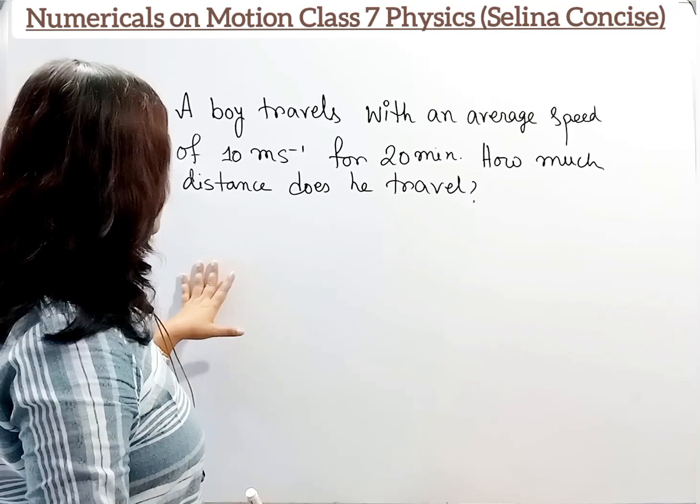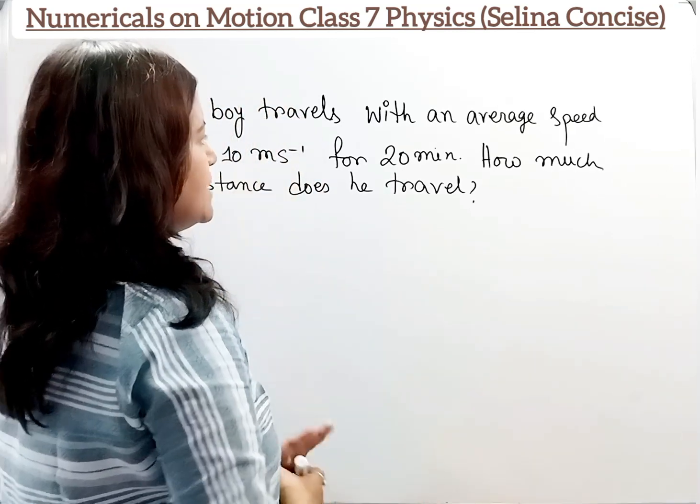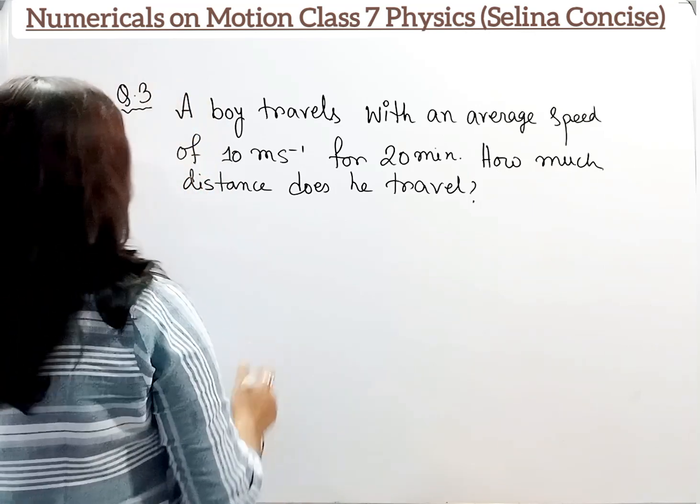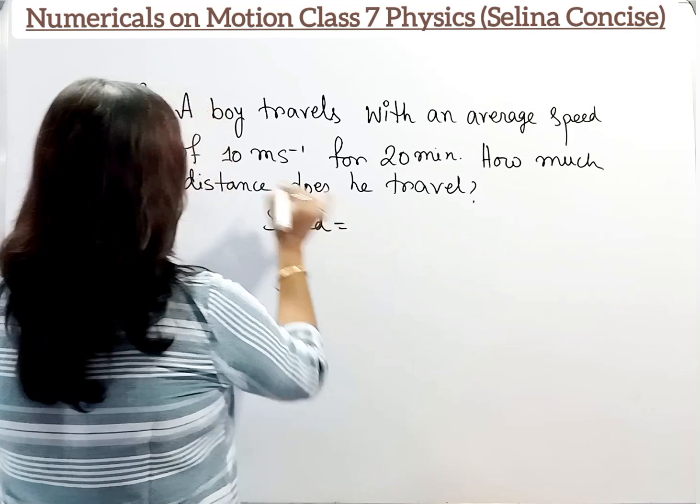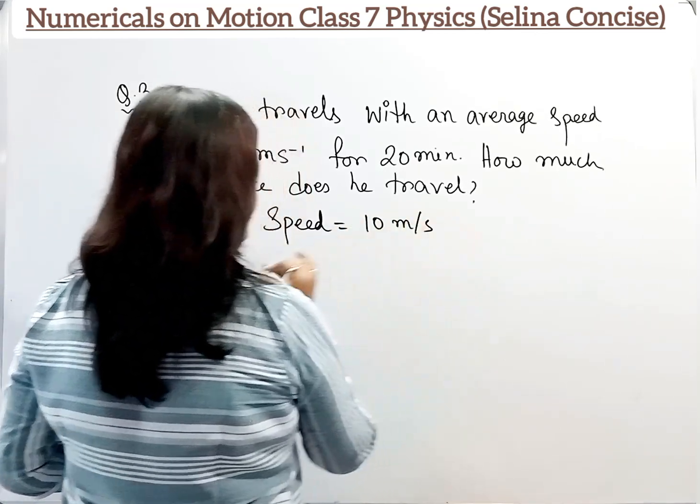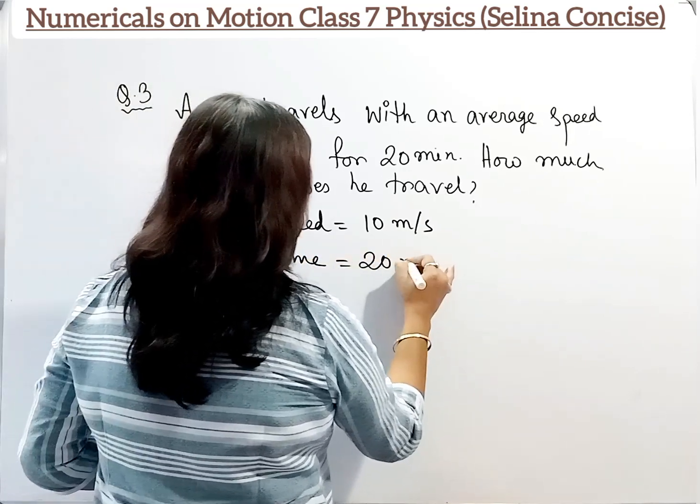Now question number 3. A boy travels with an average speed of 10 meters per second for 20 minutes. How much distance does he travel? Now speed is given, 10 meters per second, and time is given, 20 minutes.